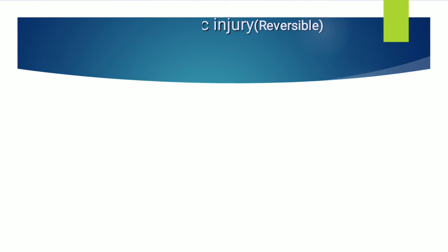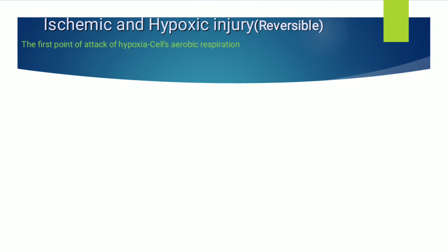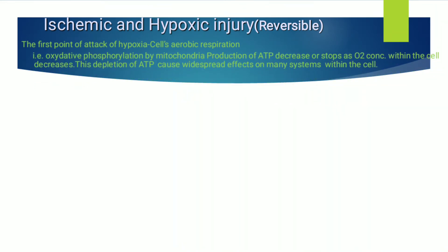Hello guys, today we will see cell injury — specifically the reversible type. In ischemic or hypoxic injury, the first point of attack of hypoxia is the cell's aerobic respiration, which leads to decreased ATP. As a common biochemical change, oxidative phosphorylation by mitochondria decreases or stops. As O2 level decreases, oxidative phosphorylation in mitochondria reduces, and ATP production falls. This depletion of ATP causes widespread effects on many systems within the cell, since ATP is important for energy and work.